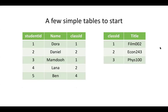To start, we'll work with very simple tables. Consider a database with two tables: one storing student information and one storing class information. It has the student name, the particular class they're enrolled in, and the class title. You can use the class ID of a student to look up what class they're enrolled in. Dor and Mamdu are enrolled in film, Daniel and Lana in economics. Ben is enrolled in something that doesn't exist because something got messed up, and physics doesn't have any enrolled students — we'll come back to these outliers later.